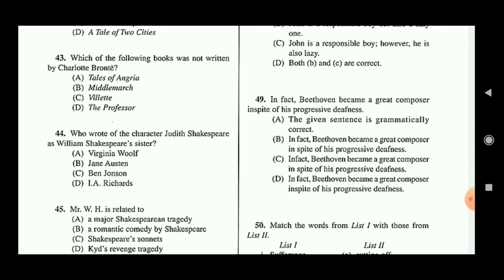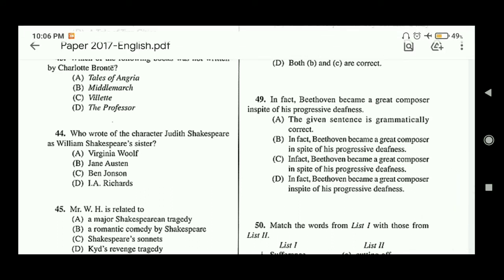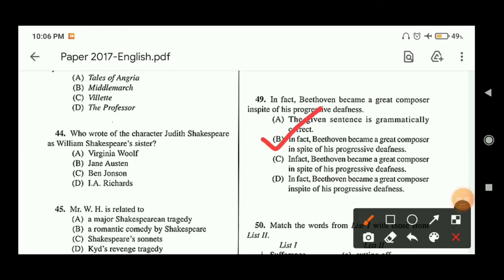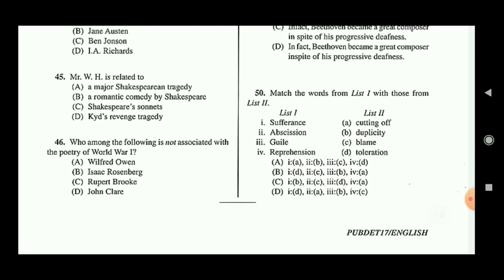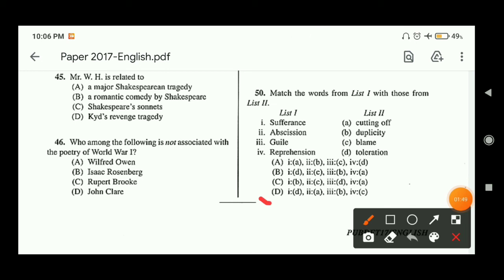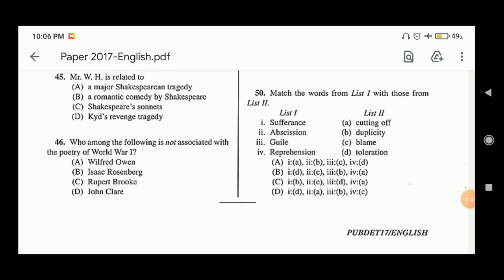Question forty-nine: 'Beethoven became a great composer in spite of his progressive deafness.' There may be grammatical errors in the sentence and four options are given — choose the correct one. Option B is the correct answer because the remaining options contain grammatically incorrect constructions. Question fifty: match the words from list one with those from list two. Option D is the correct answer.